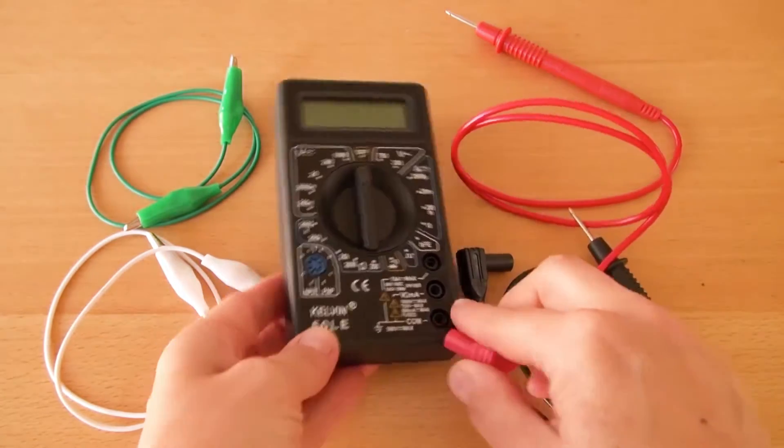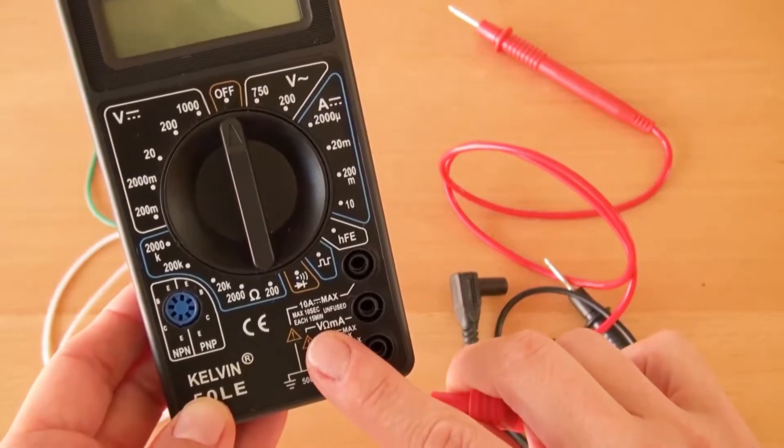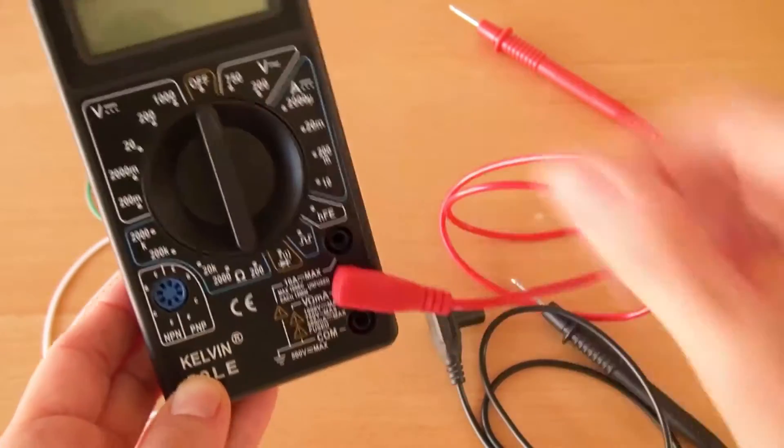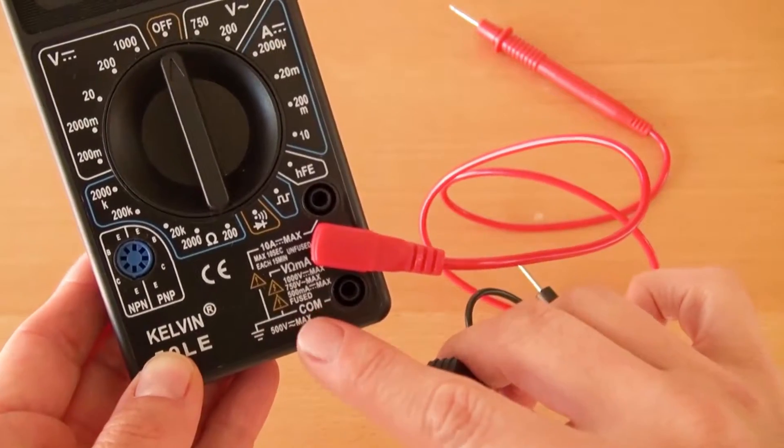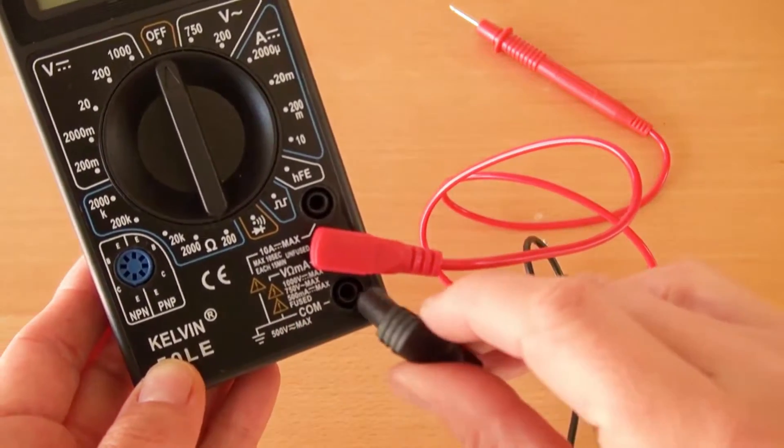First, plug the red probe into the multimeter port that says V Omega M A, and the black probe into the port that says COM on the multimeter.